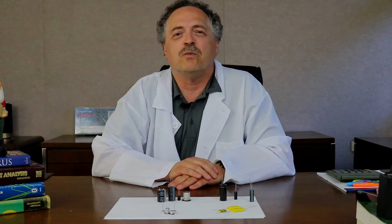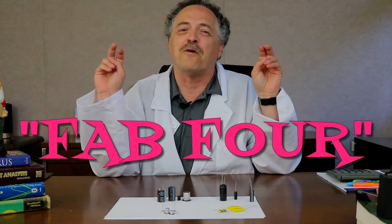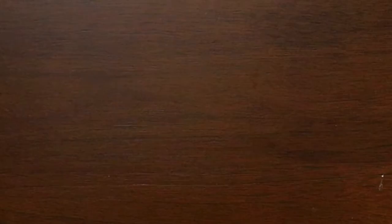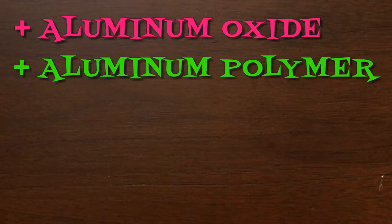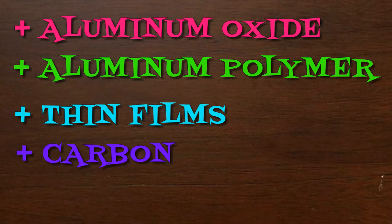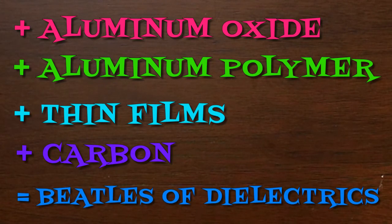They're right here. Of course, the list doesn't stop there, but those are the most common dielectrics. We at Nichicon use what we like to call the fab four of dielectrics. They're the classics and we do them best: aluminum oxide, aluminum polymer, thin films, and carbon. They're like the Beatles of dielectrics.